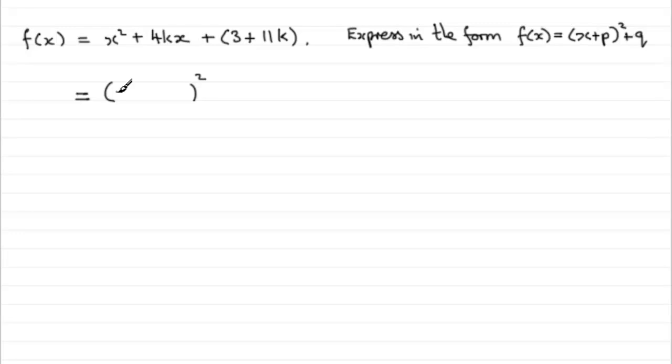We put just x at the front here, and we always halve the coefficient of x. The coefficient of x is the value in front of x, which in this example is plus 4k. So if you halve plus 4k, you're going to get plus 2k.